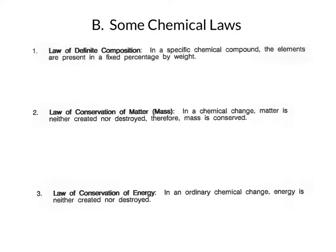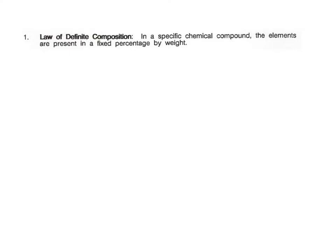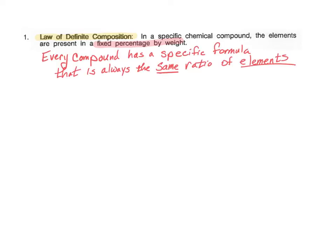There are three chemical laws that we'll be expecting you to remember and be able to identify in this exam. They are the law of definite composition, the law of conservation of mass or matter, and the law of conservation of energy. Let's look at each of those individually. So first we have the law of definite composition. And it states that in a specific chemical compound, the elements are present in a fixed percentage by weight. What does that mean?